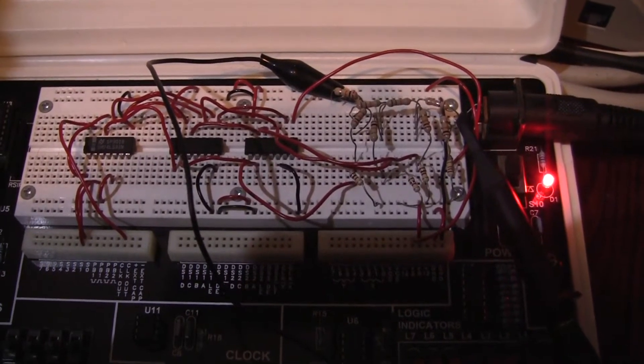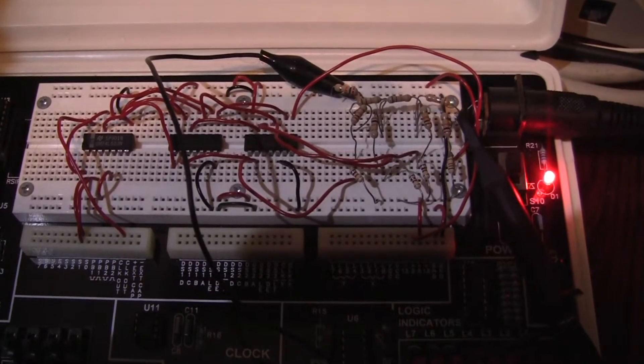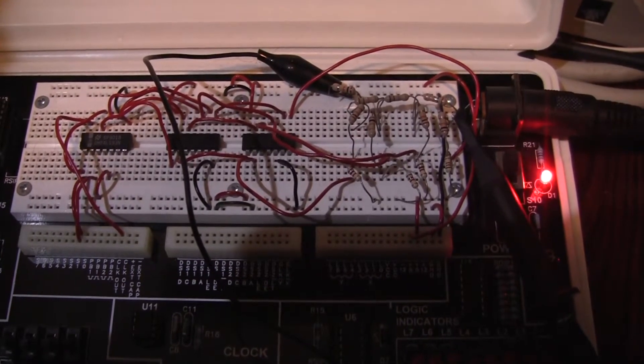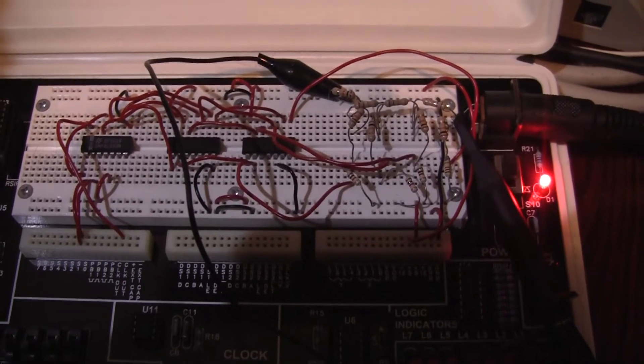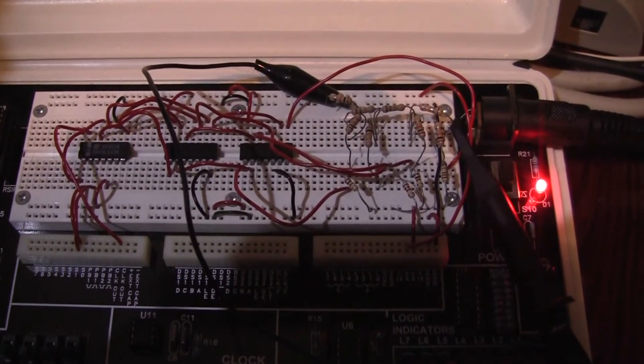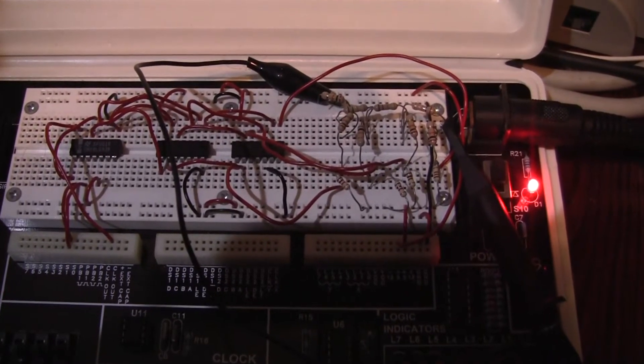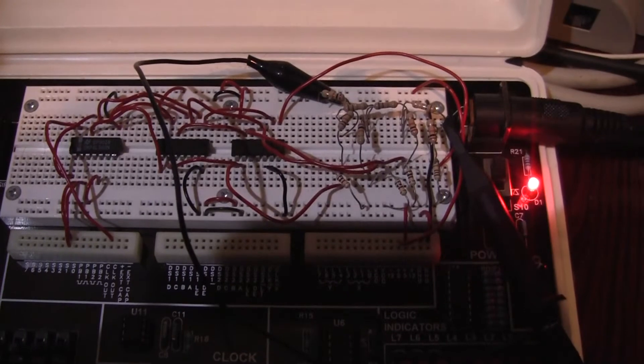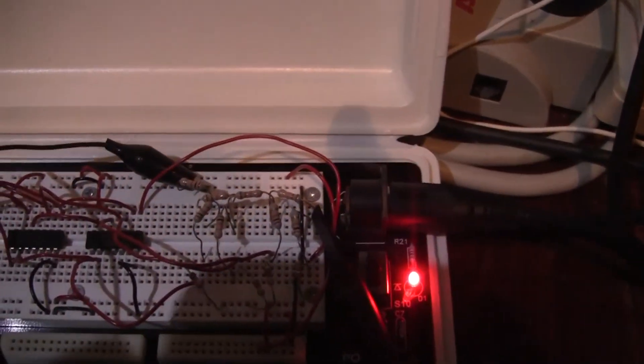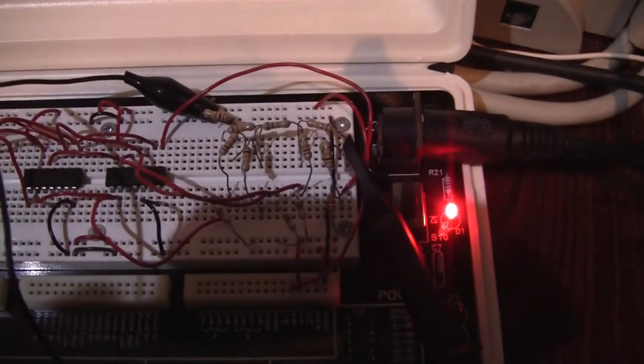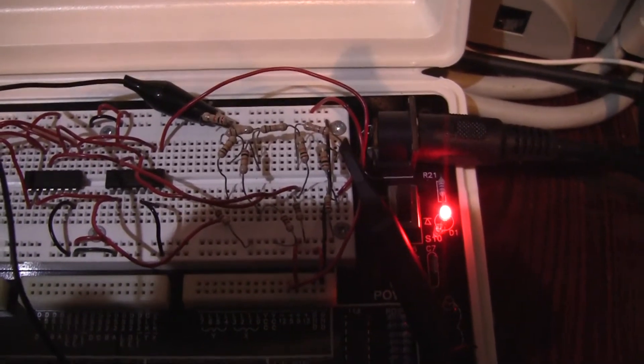On the left we have a binary counter and then it feeds into some inverters and finally the rightmost IC is basically an open collector buffer. And as you can see, we have the resistive ladder here and we're sampling it with the oscilloscope to show you the pattern.